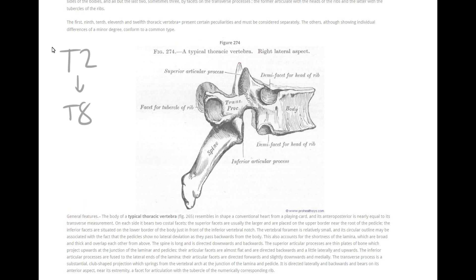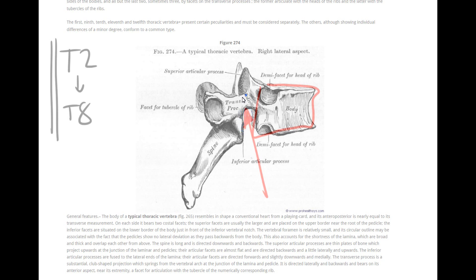Typical vertebrae, that's T2 to T8, all share the following features: medium-sized heart-shaped vertebral bodies, medium-sized vertebral canal, transverse process with costal facets, and a long spinous process angulating downwards.